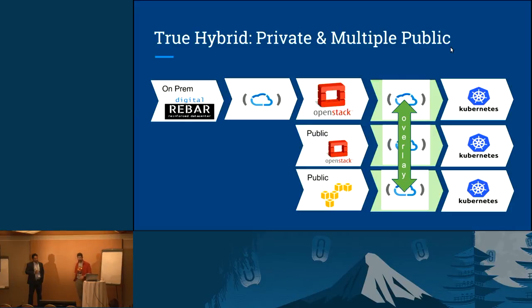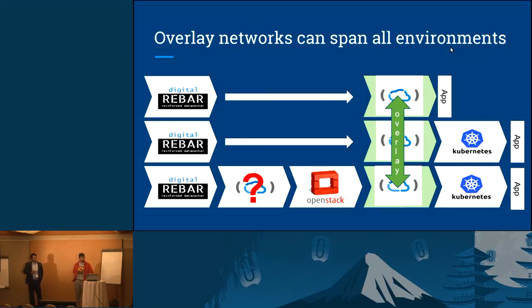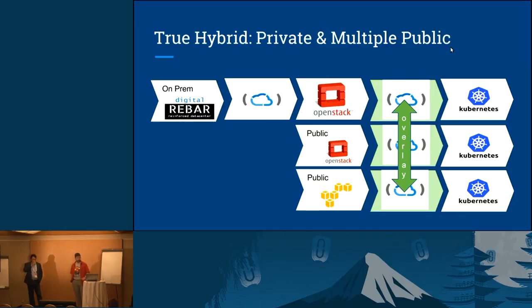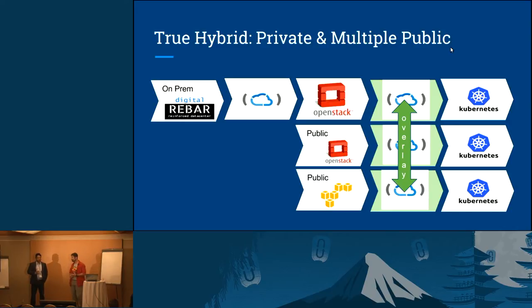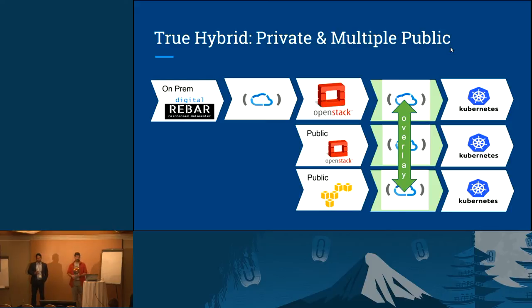If you can do all these things, then you've created a private infrastructure. The difference from the previous slide is that this is working in your own infrastructure where you own the metal. But here we're talking about something where you're mixing and matching not just different types of infrastructure that you own, but different types of infrastructure that you might access without owning it — so public clouds.